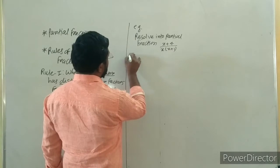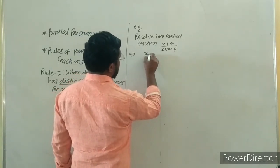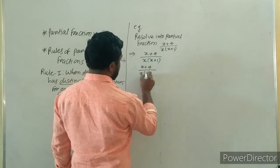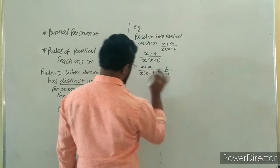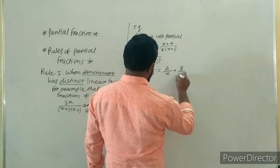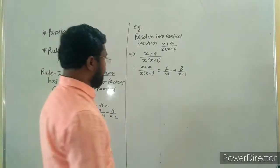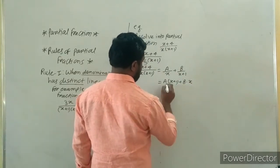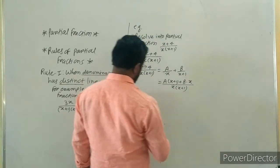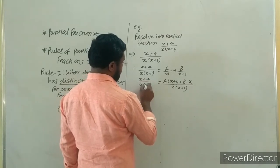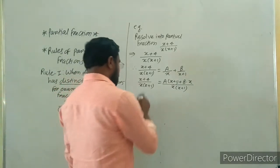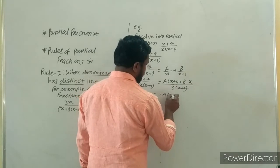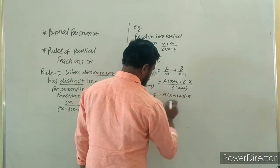It is very simple. For example: (x+4) upon x(x+1). Therefore, (x+4) upon x(x+1) is equal to A upon x plus B upon (x+1). By cross multiplication: x+4 equals A multiplied by (x+1) plus B multiplied by x. This is equation number one.